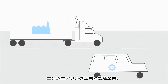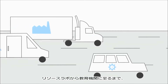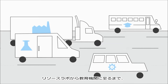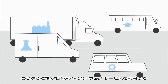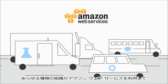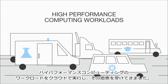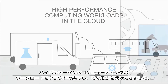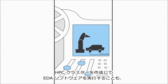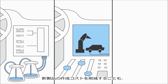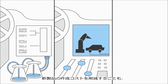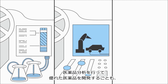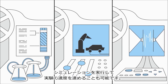From engineering and manufacturing firms to research laboratories and academic institutions, organizations of all types have benefited from using Amazon Web Services to run high-performance computing workloads in the cloud. You can create HPC clusters to run electronic design automation software to reduce the cost of creating new products, perform drug analysis to make better medicine, and run simulations to increase the speed of experimentation.